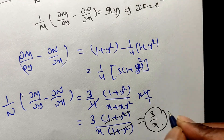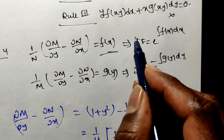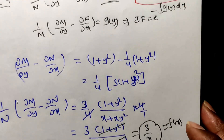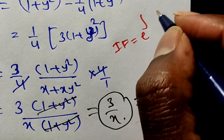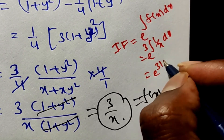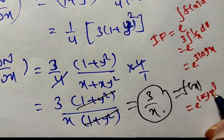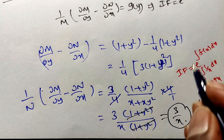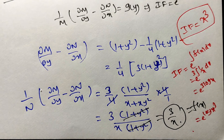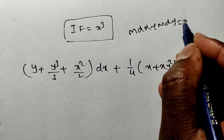The integrating factor is e^(∫f(x)dx) = e^(∫(3/x)dx) = e^(3 ln x) = e^(ln x³) = x³. The integrating factor is x³. We now multiply x³ through the given differential equation M dx + N dy = 0 to make it exact.